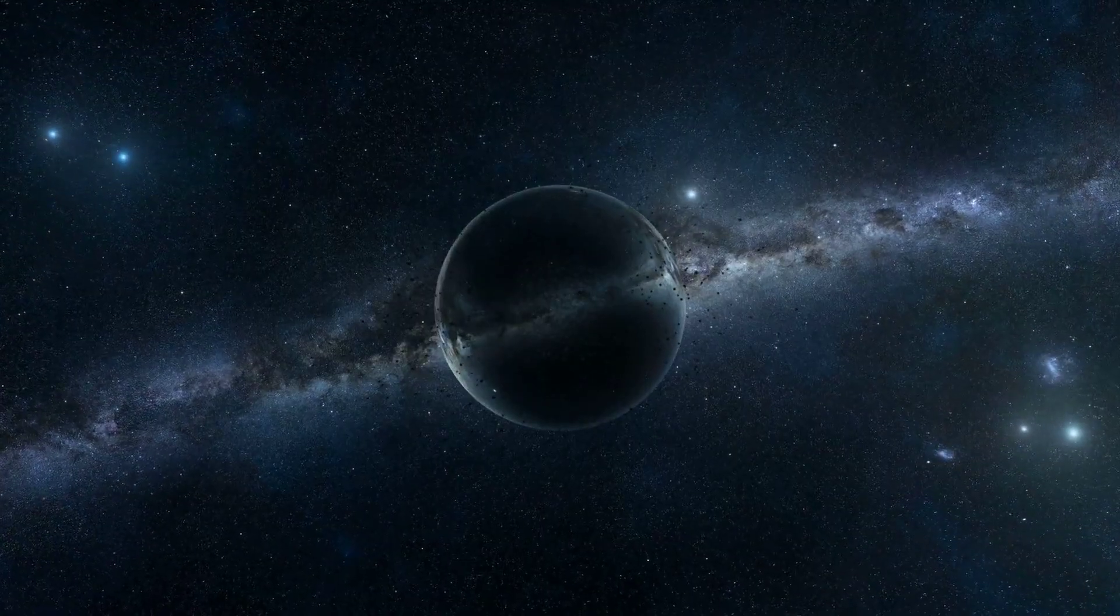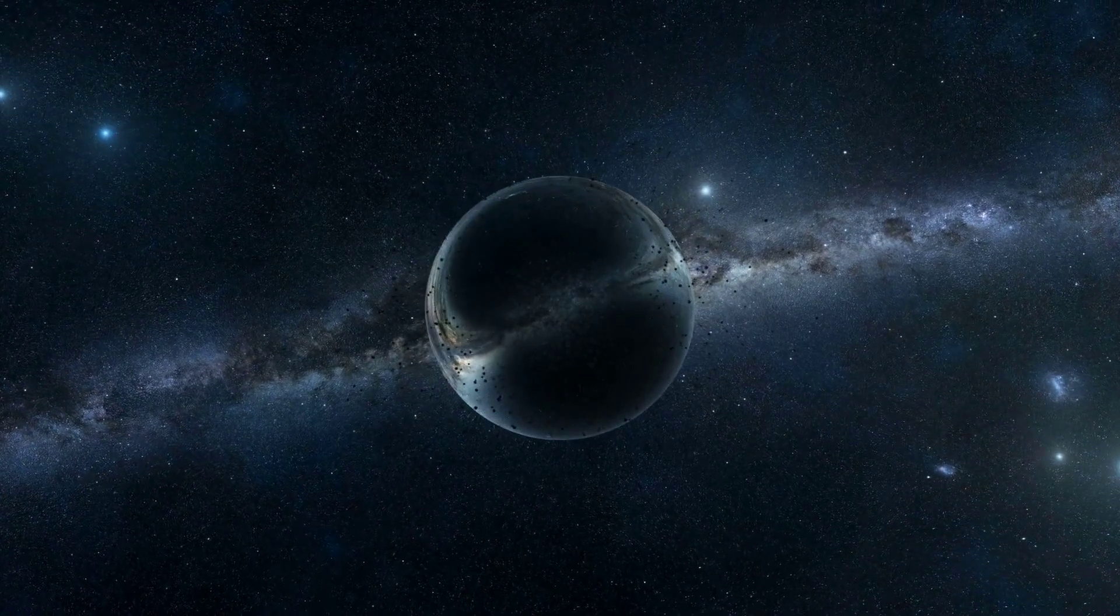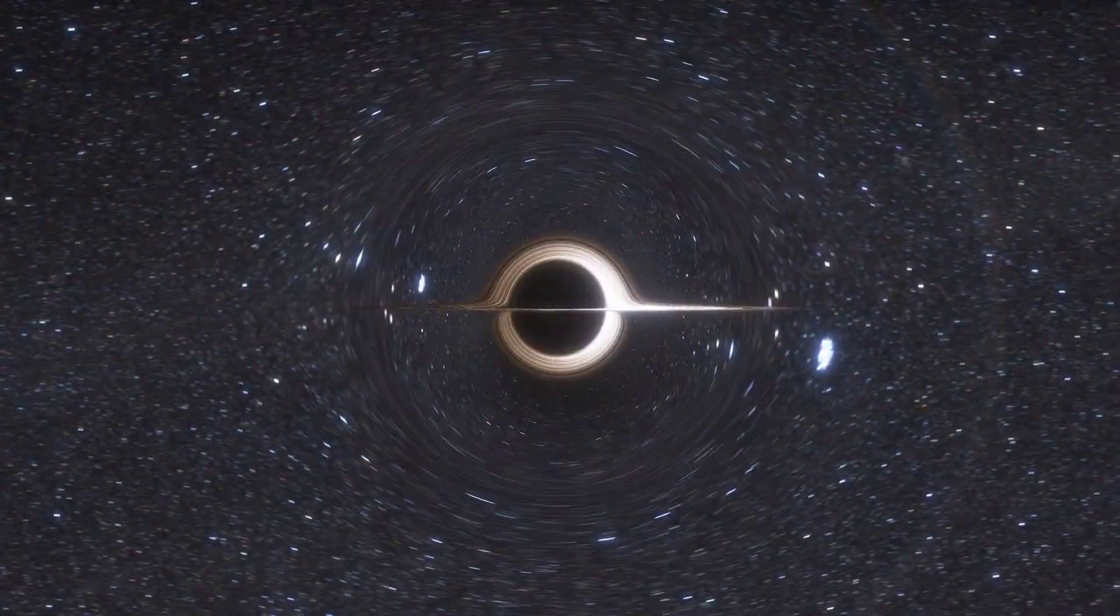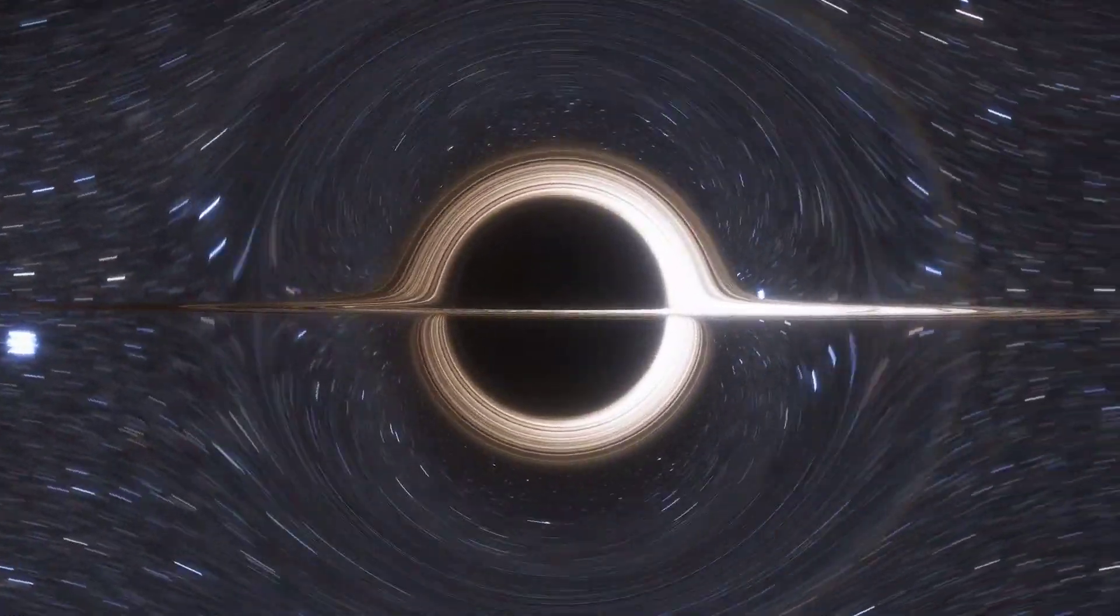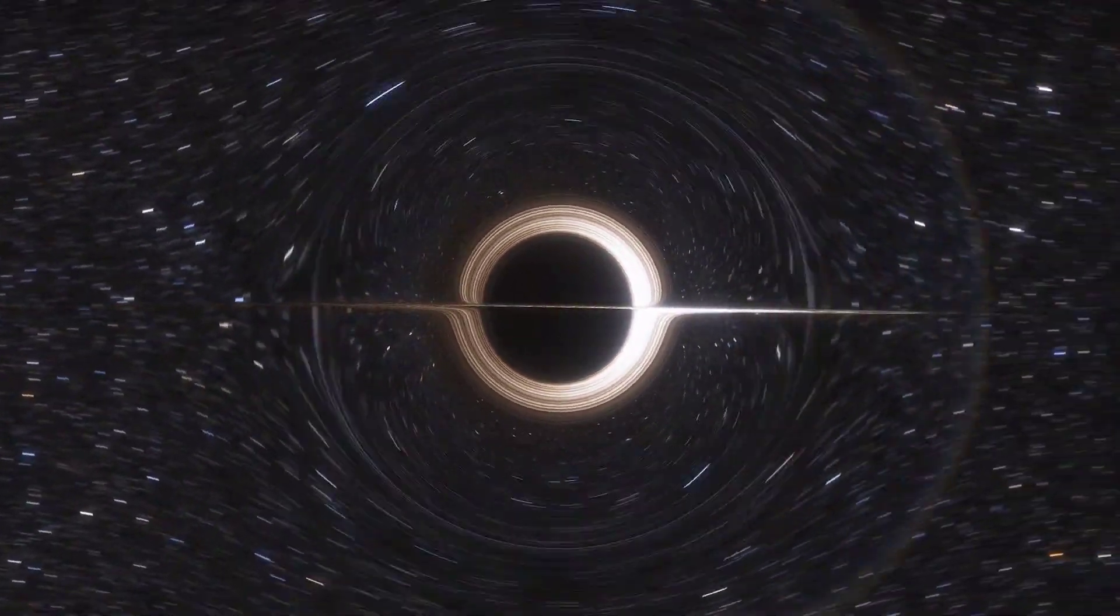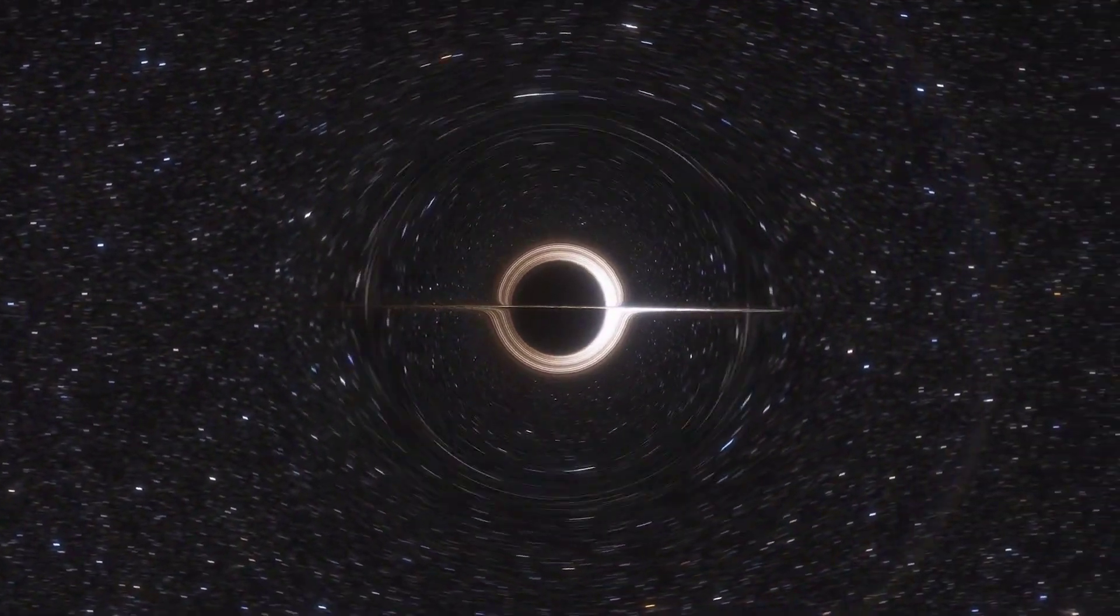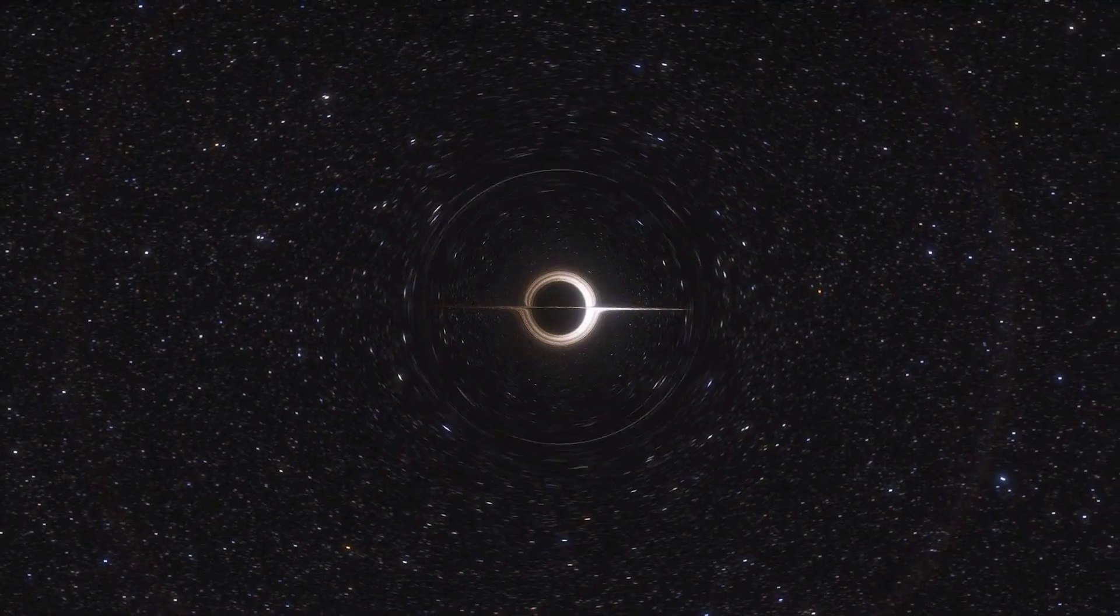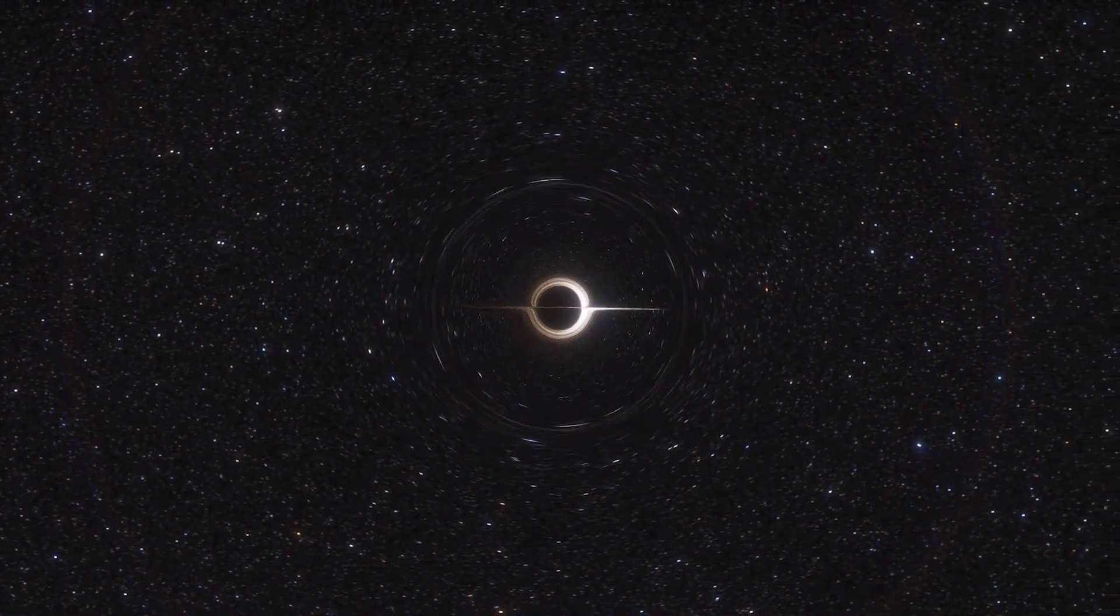Alright, before we get into why light bends near a black hole, let's first make sure we understand what a black hole actually is. In simple terms, a black hole is a region in space where the gravitational force is so strong that nothing can escape it, not even light. This is why we call it a black hole, because it doesn't emit any light and is therefore invisible to the naked eye.